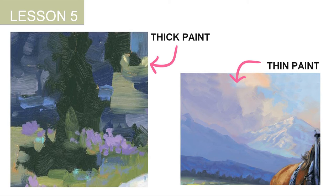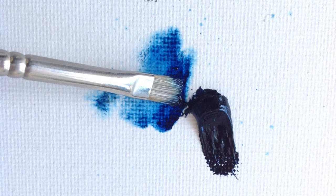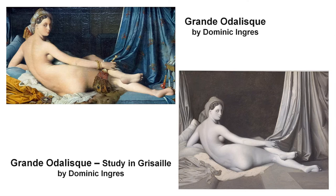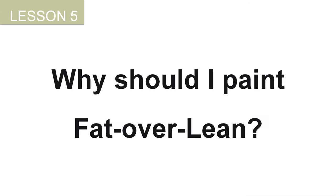There is a basic rule in oil painting called fat over lean: we must paint fat layers over lean layers. This means that slow-drying layers — thick or more oily paint — should go over thin or less oily paint that will dry faster. At the beginning of the oil painting medium, the old masters had issues with this layering process and learned to resolve them, creating the fat over lean model and passing it on to following generations. But why should we paint fat over lean?